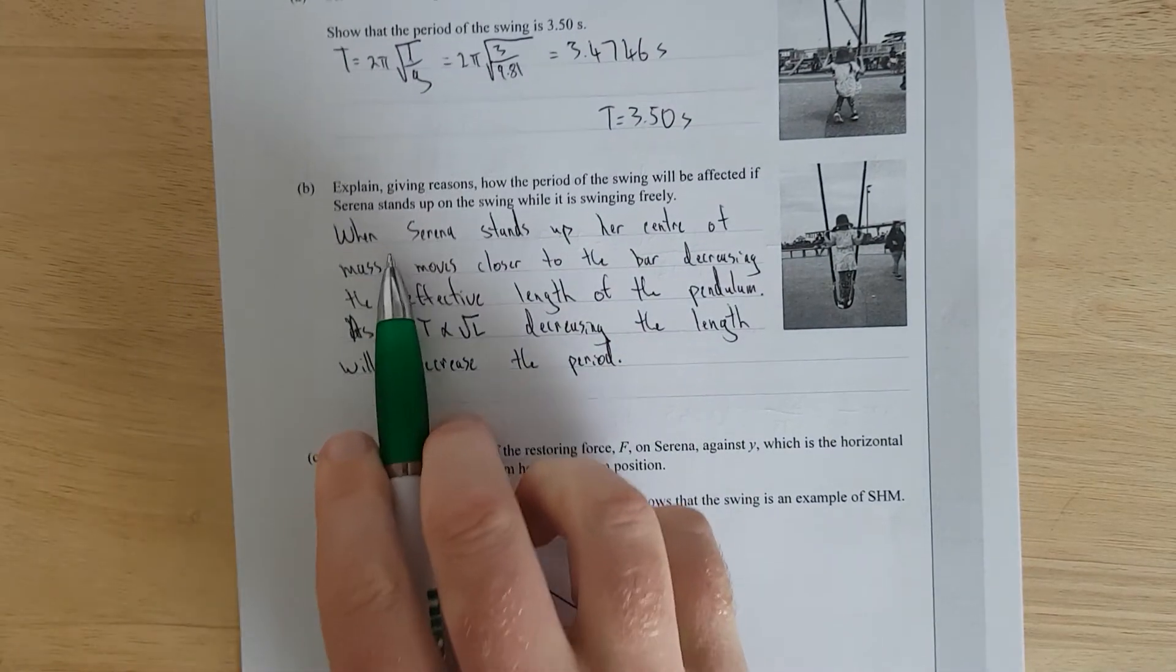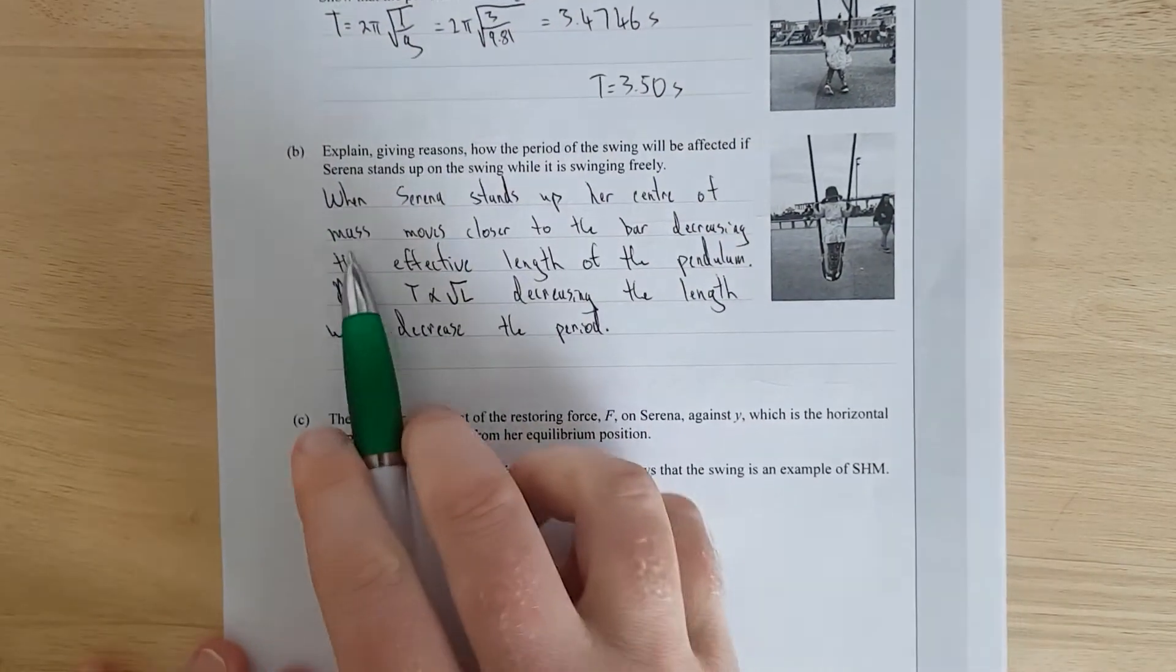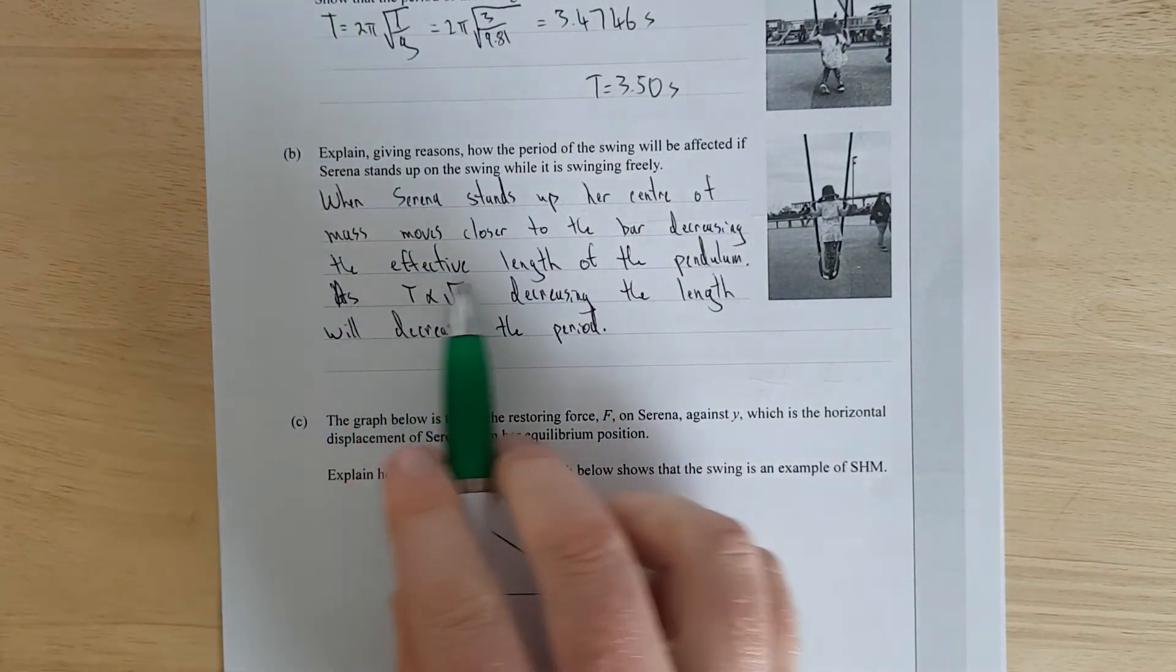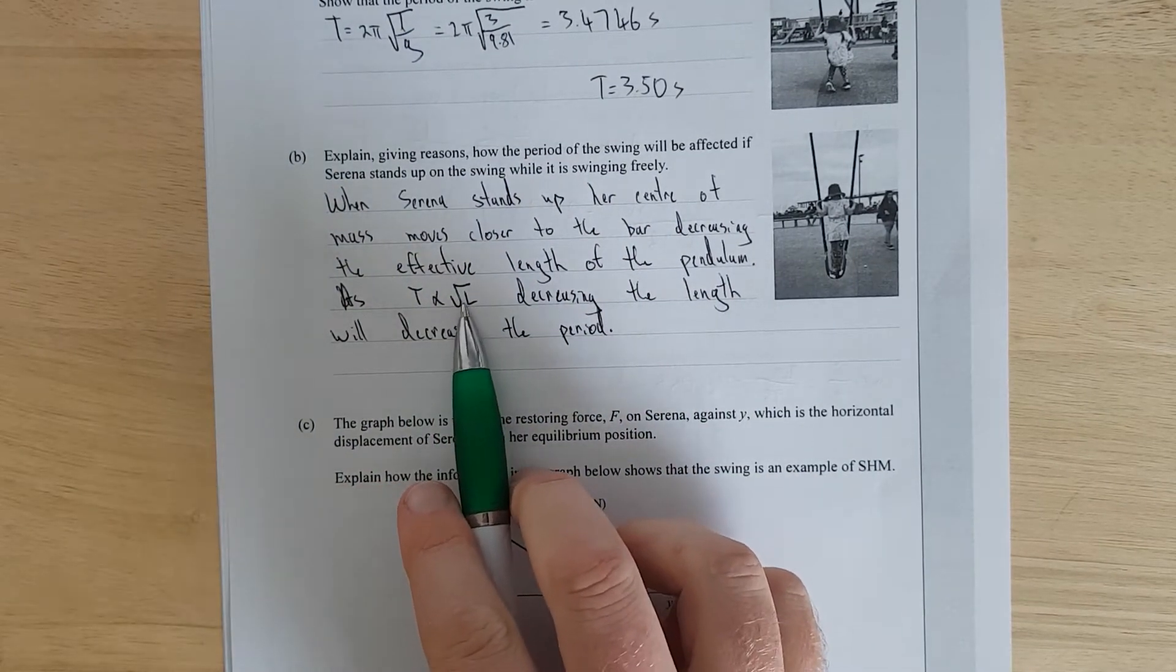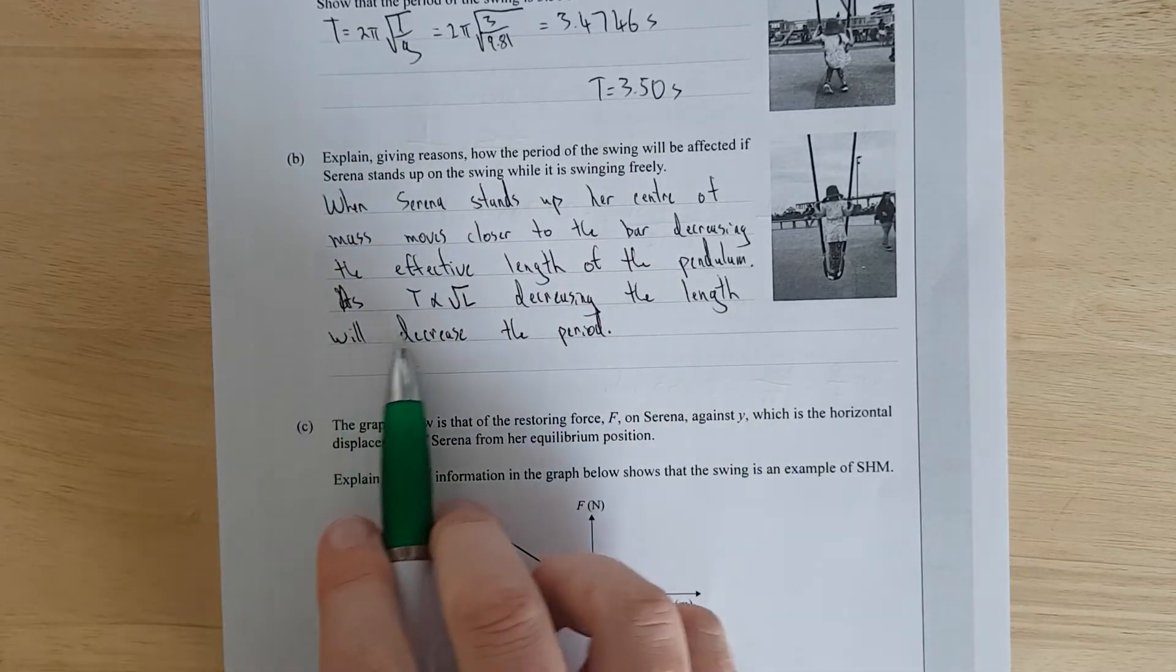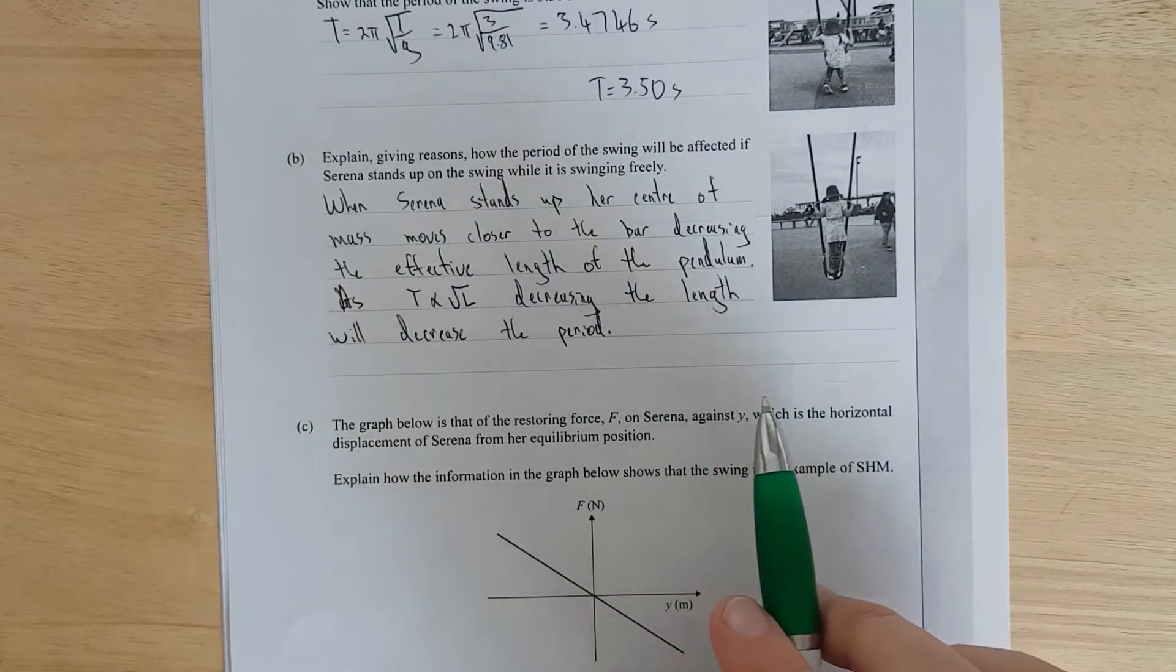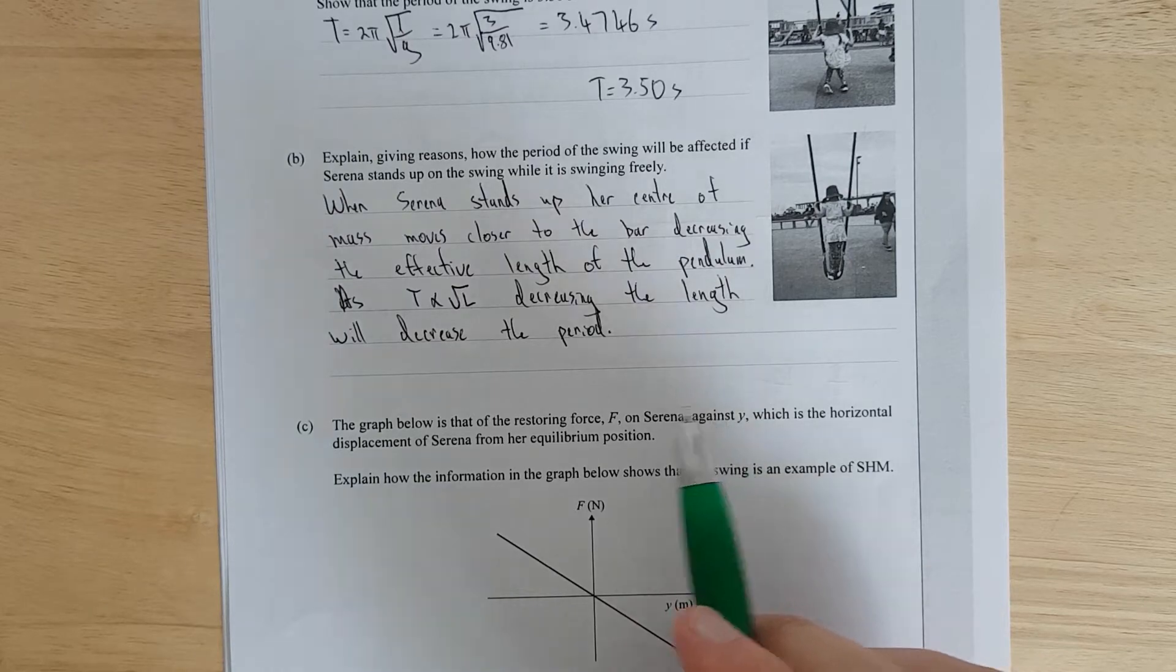So I've said, when Serena stands up, her centre of mass moves closer to the bar, decreasing the effect of length of the pendulum. As the period is proportional to the square root of the length, decreasing the length will decrease the period. That's really about it.